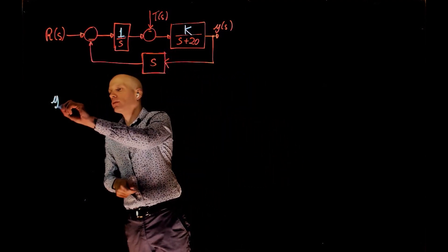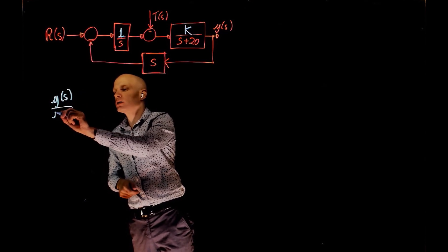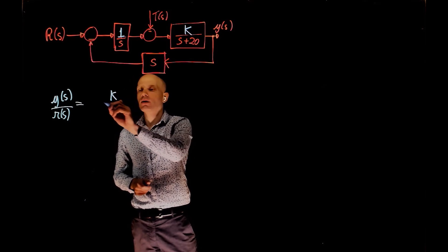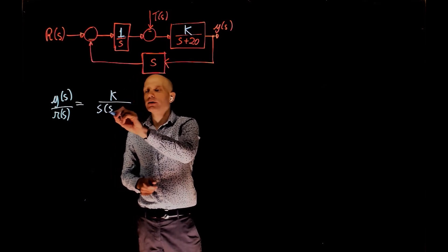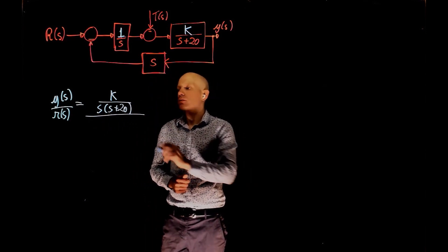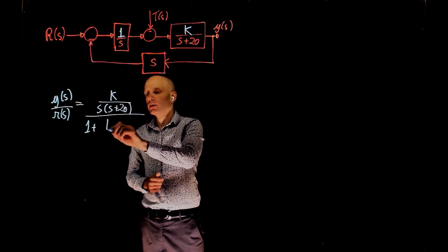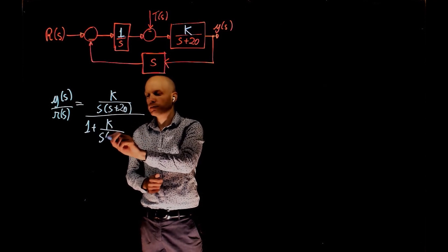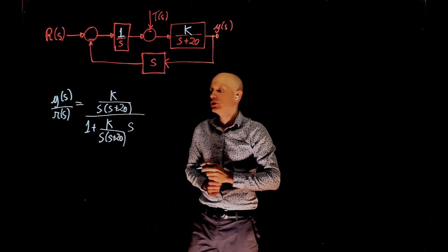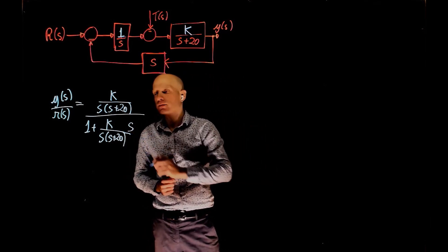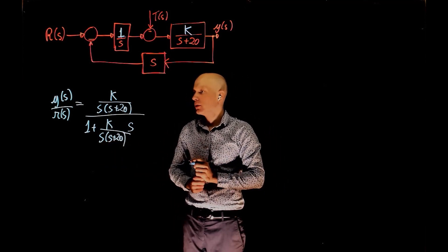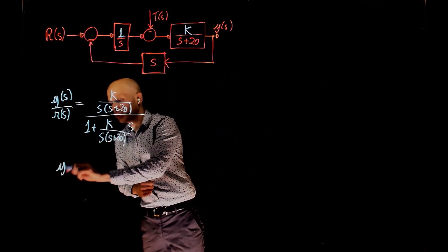The transfer function y over r is simply the line function, that is k over s(s + 20), divided by 1 plus the same function times feedback function s. The common denominator here would be s(s + 20), so we can rearrange this expression as k over s times (s + 20 + ks).